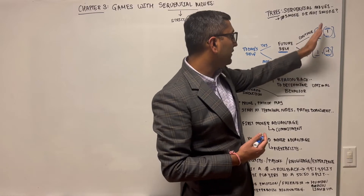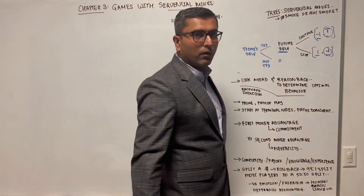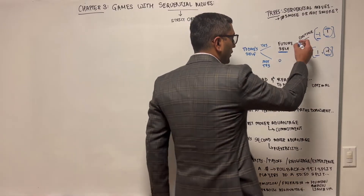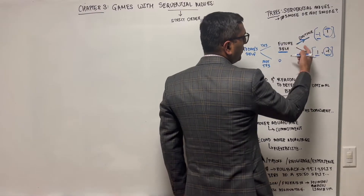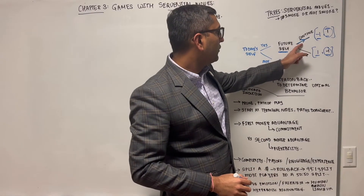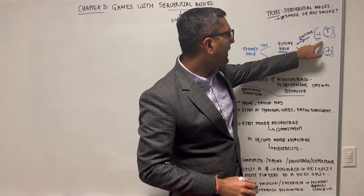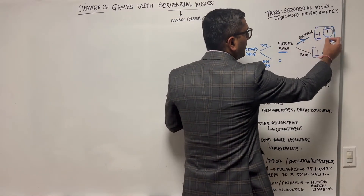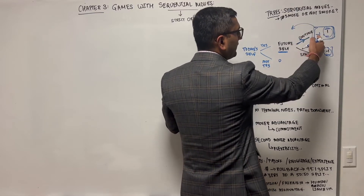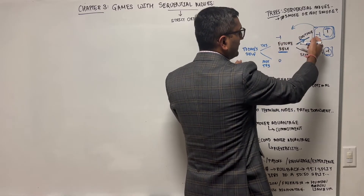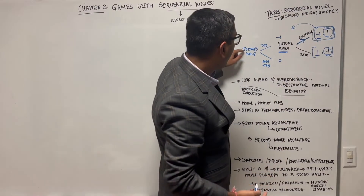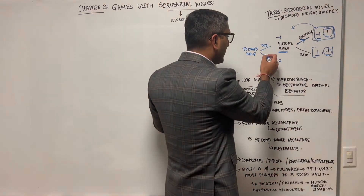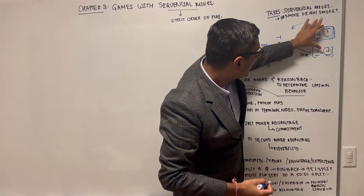Once you've given the payoffs at all the leaf nodes, let's see what the future self decides. The future self sees a payoff of one versus minus one and will choose to continue smoking. You draw an arrow showing this is the dominant or preferred path. Then you bring that payoff forward — the future self continuing to smoke gives today's self a payoff of minus one.